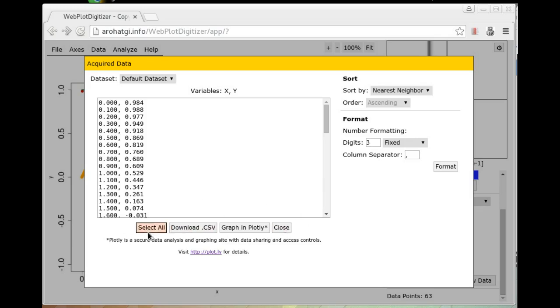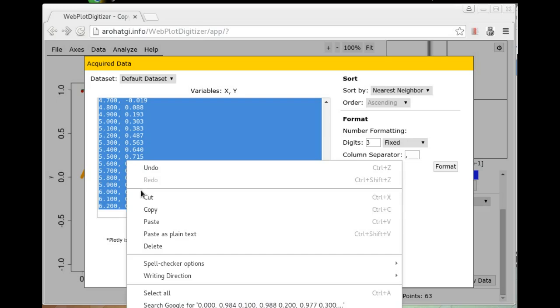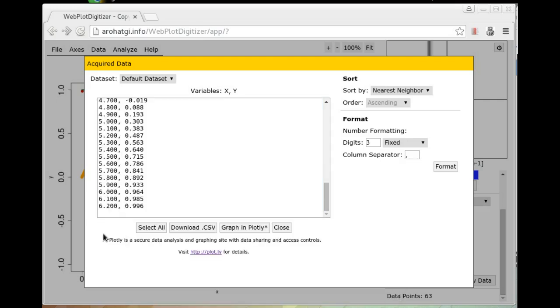Down here, we also have a few controls to select all the data from here. You can also copy paste into your favorite spreadsheet program. You can also download the data as a dot CSV file. You can also send the data to Plotly, which is an online data analysis and plotting tool. For more details, I recommend visiting Plotly website. Once you're completed, click close.